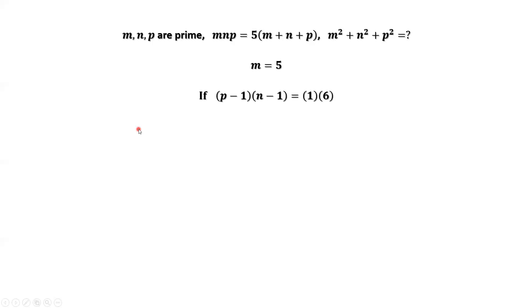Consider this combination. If p minus 1 times n minus 1 equals 1 times 6, this means p minus 1 equals 1, n minus 1 equals 6. Therefore, we have p equals 2, n equals 7. Both 2 and 7 are prime. This is the answer.